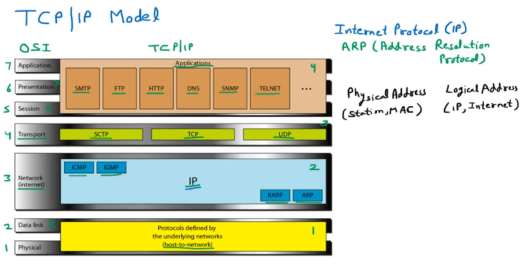Whenever an internet address is given and we need to convert it to the physical address, ARP comes into picture. For example, if somebody gives you an IP address — that is the logical address — from that address you can find the physical address. That is the purpose of ARP. That's why it is named Address Resolution Protocol: finding the physical address from the logical address.